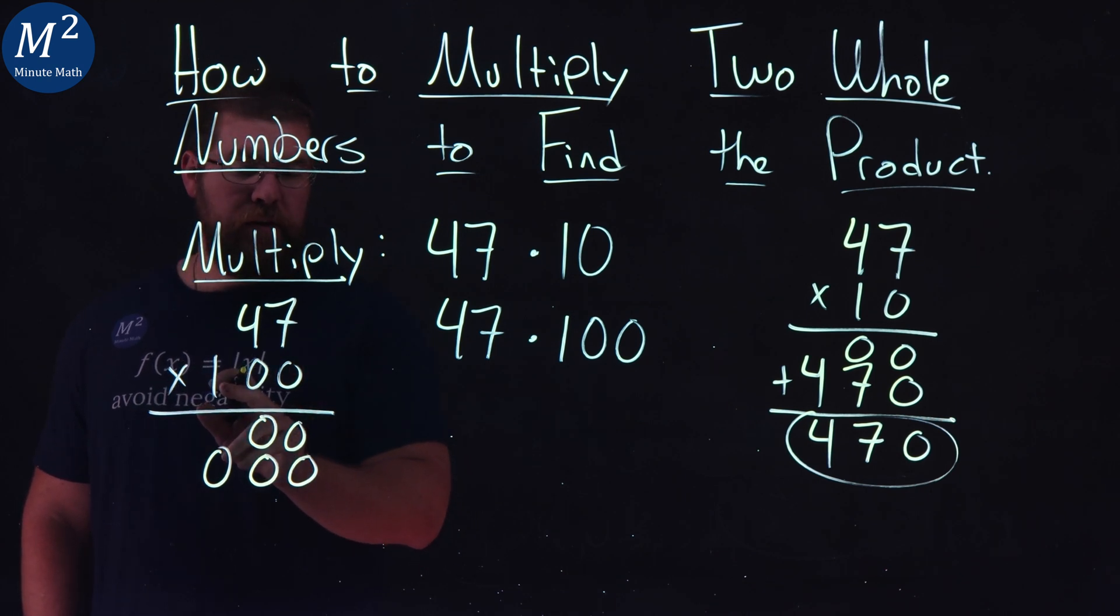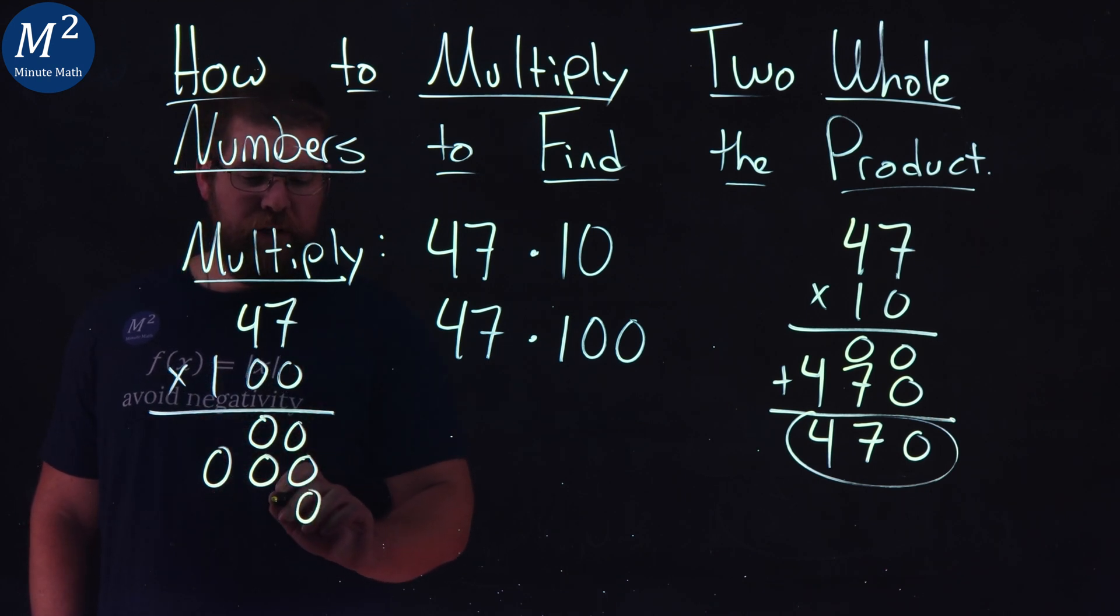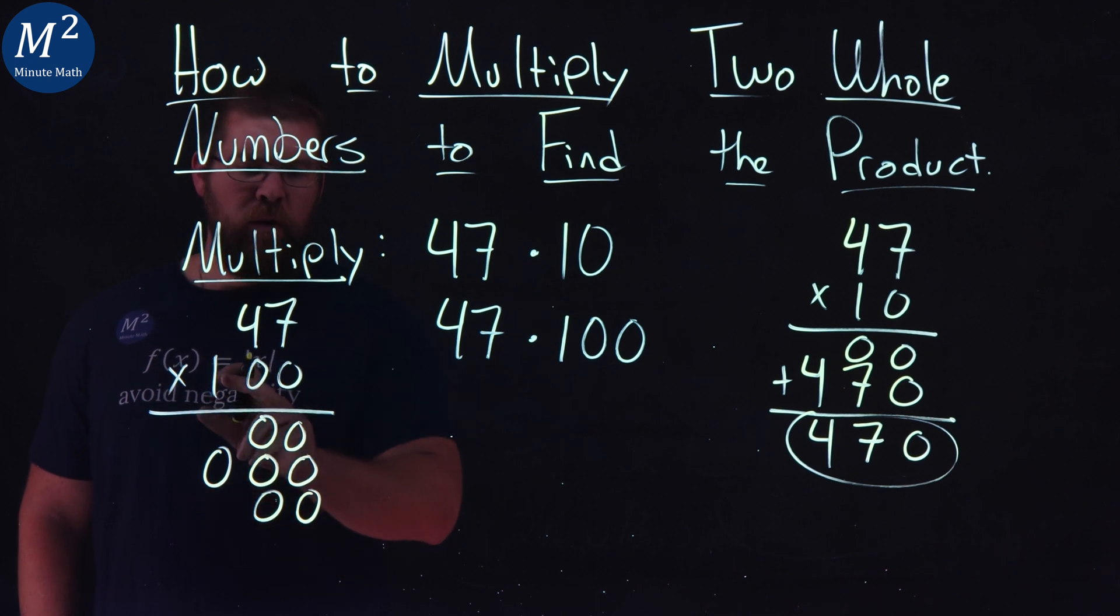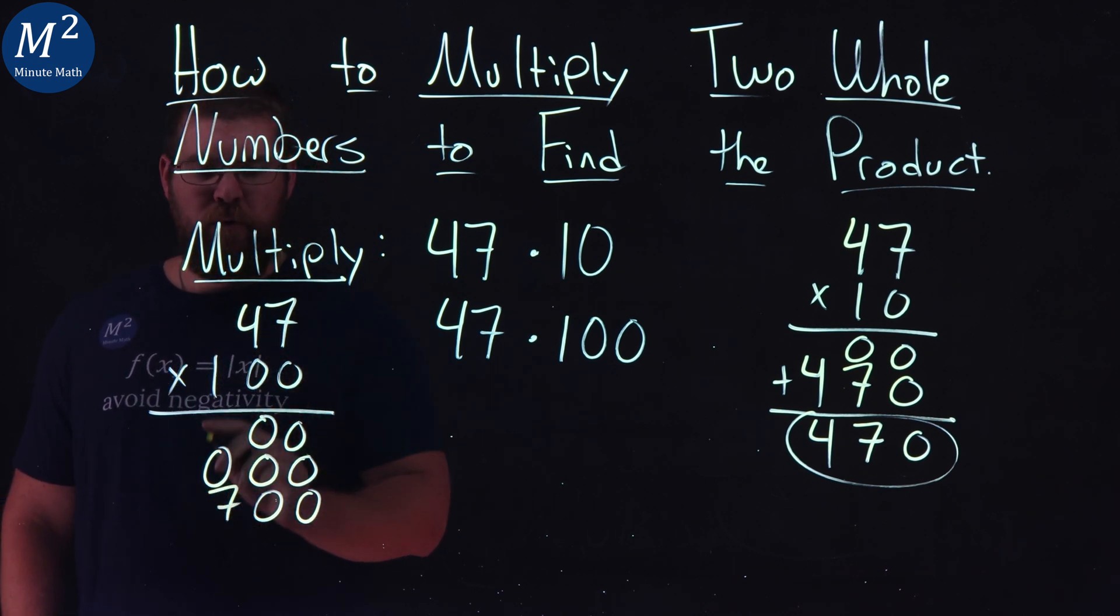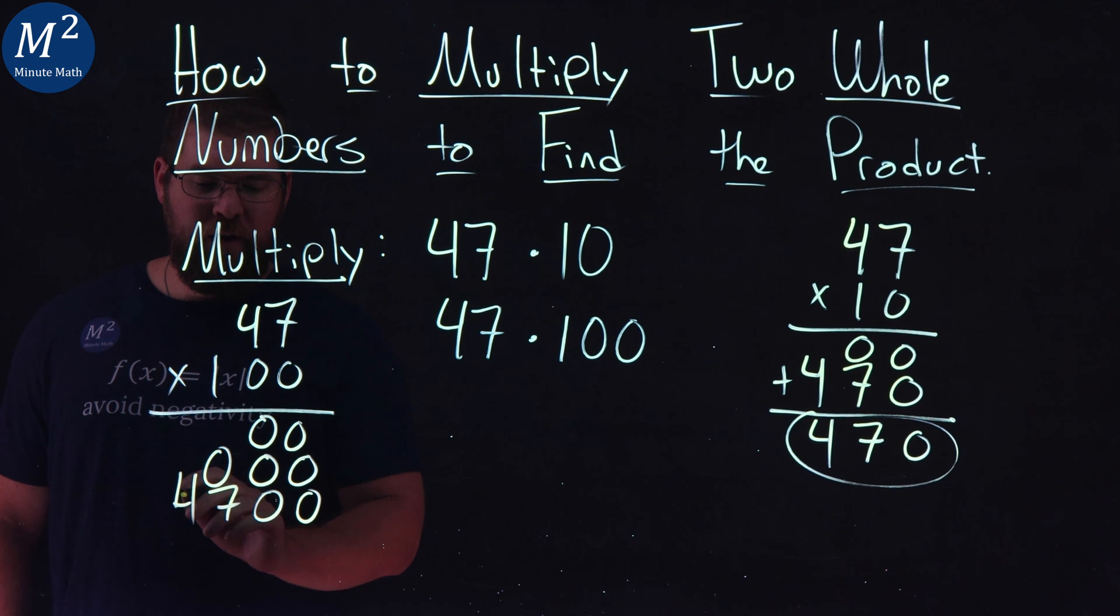We're going to move to the hundreds place, which is a one. So we have two place value zeros here. One times seven is a seven, and one times four is a four.